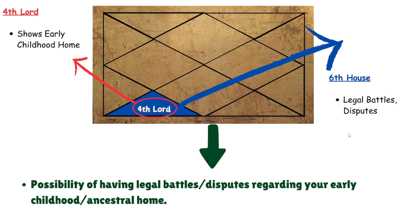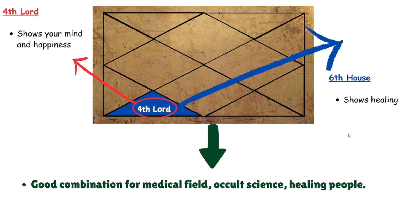The fourth lord shows your early childhood home and the sixth house is the house of legal battles and disputes. There is a possibility of a legal battle, court case, or disputes regarding your early childhood home, parental property, or ancestral home. Also, when purchasing your own home, please be cautious — check all the documents and papers of the house before proceeding with the deal.